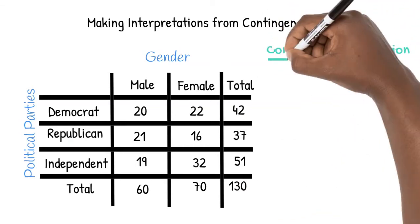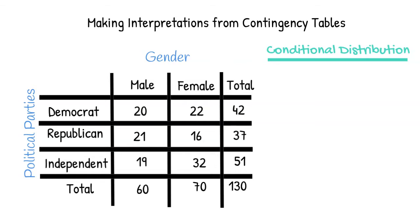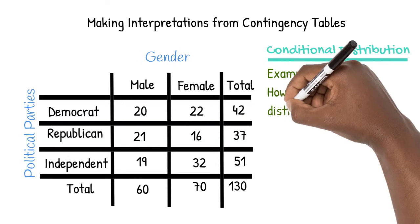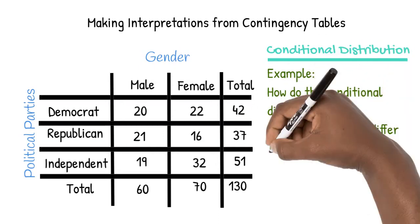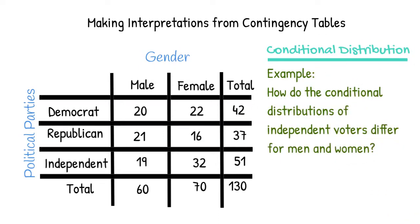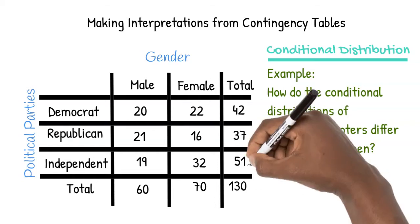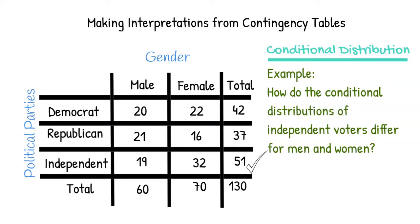We can take this a step further and start to look at conditional distributions. Conditional distribution focuses on a specific category or categories rather than focusing on the whole sample. Let's look at an example to see what I mean. How do the conditional distributions of independent voters differ for men and women? Since we are interested in the distribution of Independent Voters, our total is now 51 — the total count of Independent Voters.